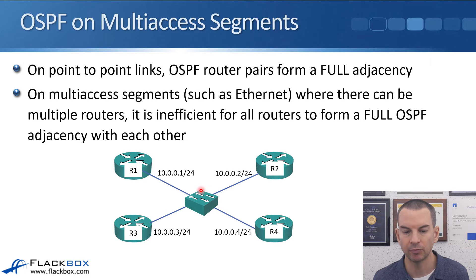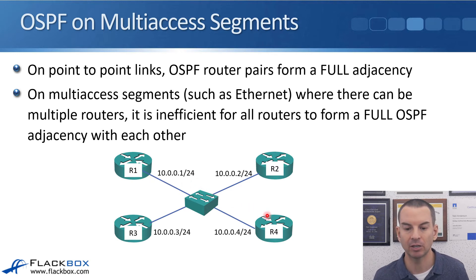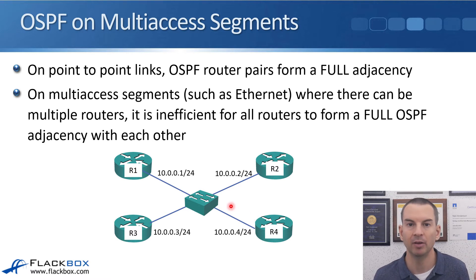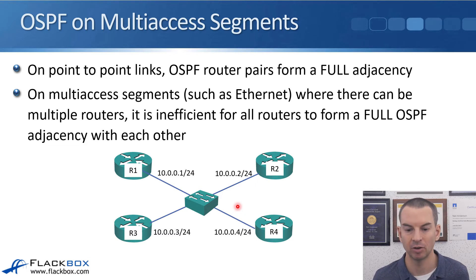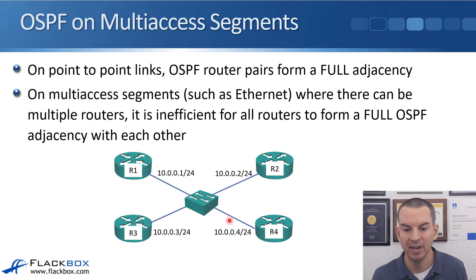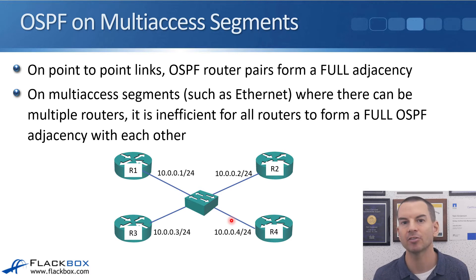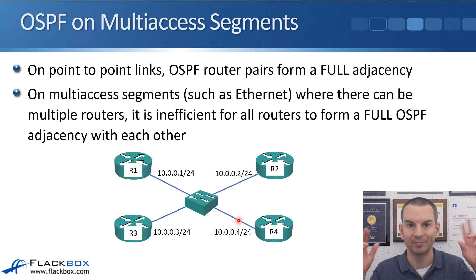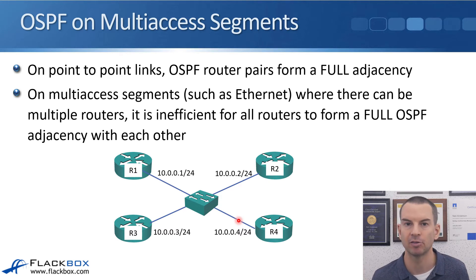A better idea is if one of these routers could be elected as a type of master, and then all the routers could share their information with the master, which reflects that information out to the other routers. Rather than a full mesh, they just send information to the master. That master is called the DR — the designated router. Because the master going down could cause a problem, we also have a BDR — a backup designated router — just in case the DR goes down.